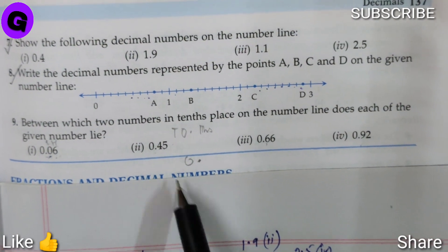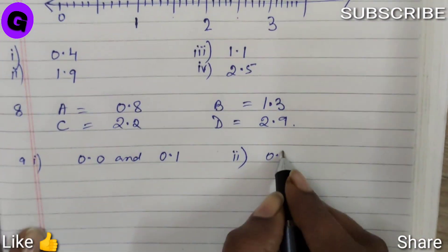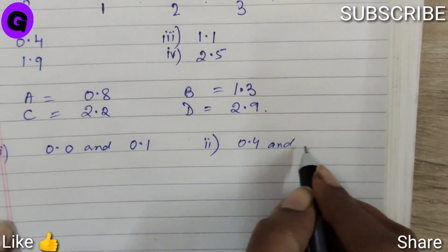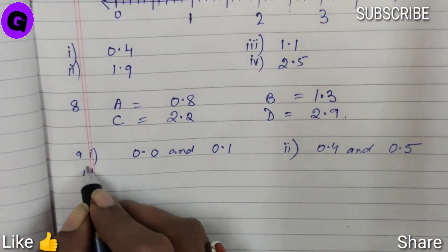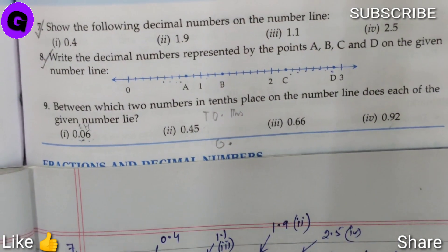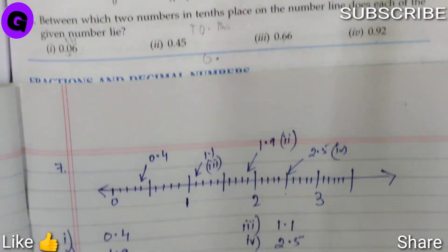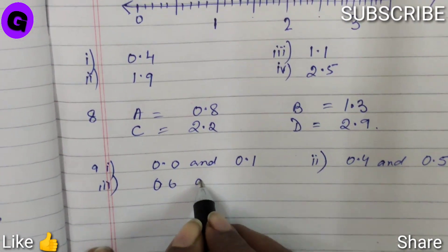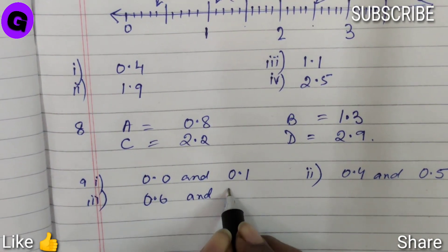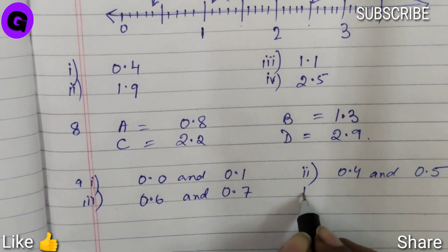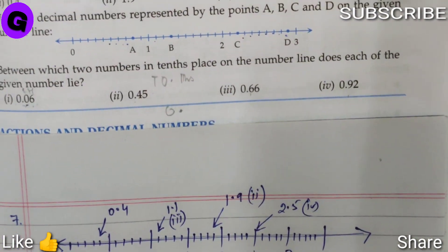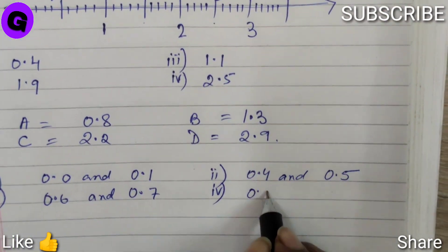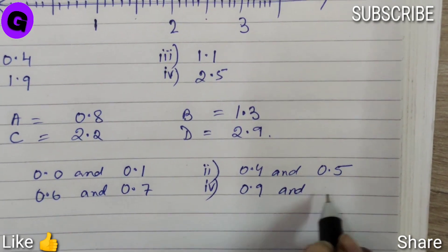Number 3, tenths place is 6, so it lies between 0.6 and 0.7. Number 4, at tenths place we have 9, so that lies between 0.9 and 1.